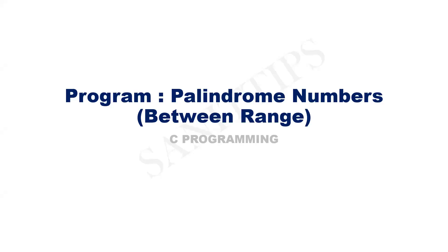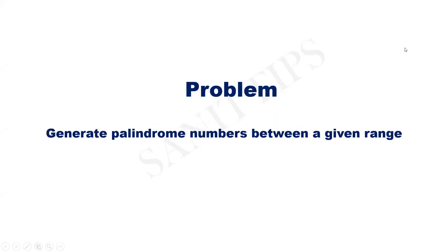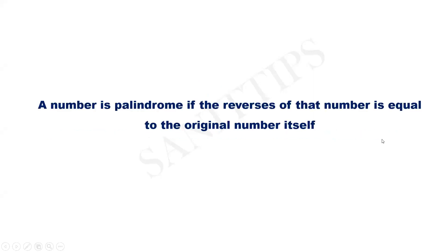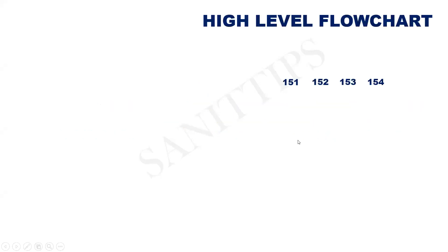In this video, let us see how to write a C program to generate palindrome numbers between a given range. A number is palindrome if the reverse of that number is equal to the original number itself.